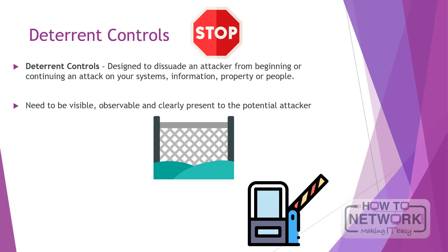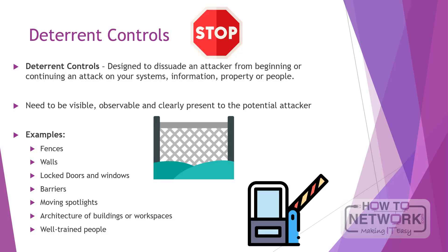Deterrent controls also add a layer of additional perceived barriers. For example, if an attacker sees guards patrolling the perimeter, they may assume that there are more guards elsewhere. Examples of deterrent controls include physical controls such as fences, walls, locked doors and windows, barriers, and moving spotlights. Most physical controls are passive, meaning they do not react to an intrusion attempt. Active controls include guards patrolling, guard dogs, and security controls.